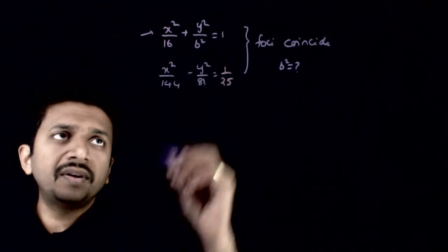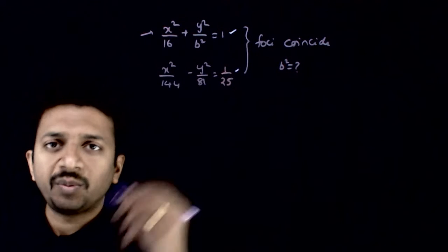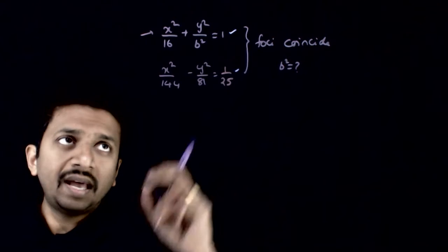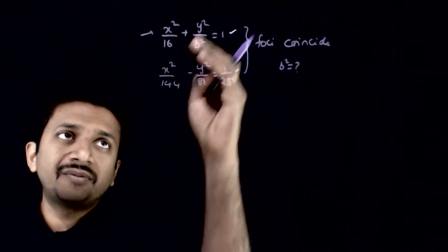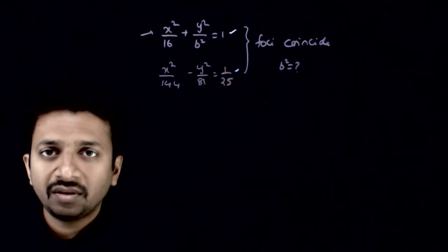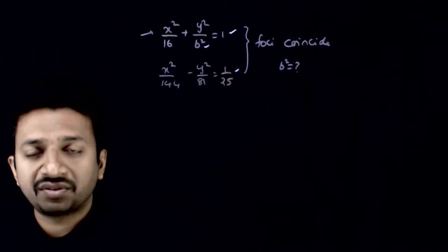Welcome students. This question gives you an ellipse and a hyperbola whose equations are given and they are confocal. That means the foci of this has to be same as the foci of this. So if that is so, what is the value of b²? That is the question.